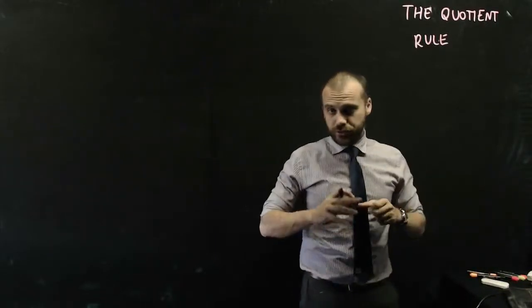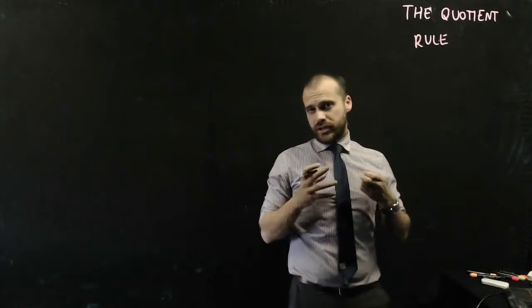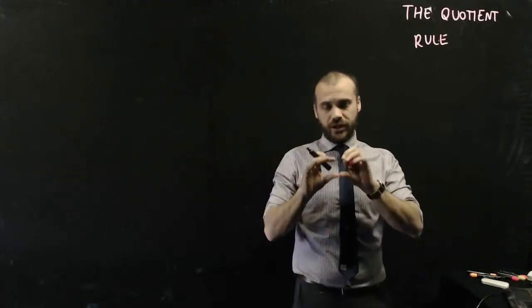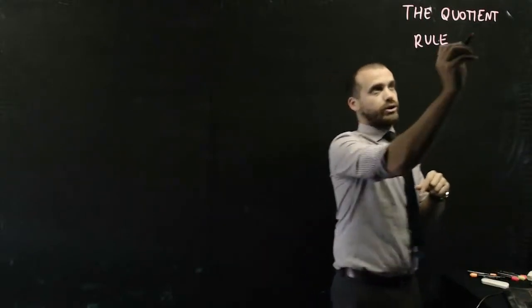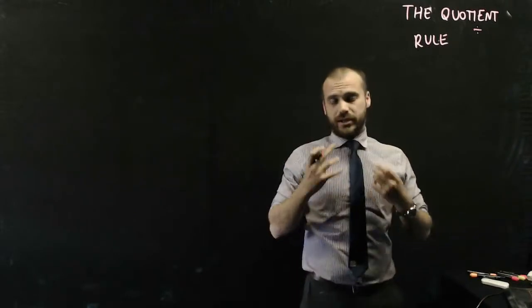So this video is on the quotient rule. Now you've already done the chain rule, which is a function inside a function. You've already done the product rule, which is a function multiplied by a function. The quotient rule, now quotient just means divide, so that's a function divided by another function.